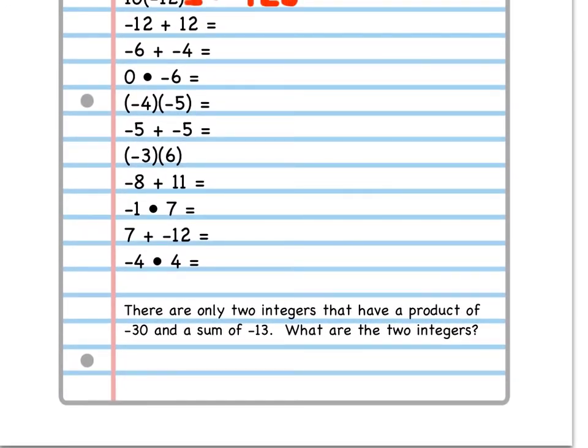Here we can read there are only two integers that have a product of negative 30 and a sum of negative 13. What are the two integers? Well, let's do a similar problem. I don't know if you guys remember the x's from this morning. But if I'm given, let's see here. So I'm going to do a different example here.